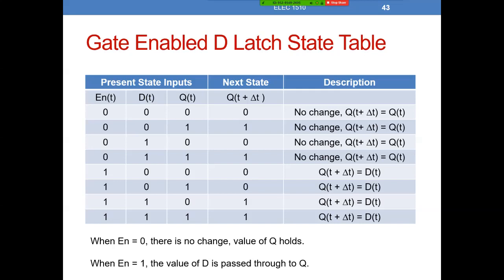The other behavior we defined is whenever the circuit's enabled — whenever the enable signal is a level of one — then Q in the next state has to be equal to whatever is sitting on D. Circuit enabled, D is a zero: Q next is a zero. Circuit enabled, D is a one: Q next is a one. It doesn't matter what Q in the present state is. That's basically our characteristic equation: whenever the circuit's enabled, Q next equals D in the present state. To summarize: whenever enable is a zero there's no change, the value of Q holds; when the circuit's enabled, the value of D is passed through to the output Q next.